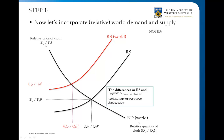The differences in the position of the world relative supply curve can be explained through simple differences in technology and production, or even resource differences. We're going to address resource differences and technology in later videos. For now we can just say that explains the differences in the relative supply of this good.